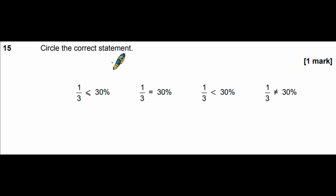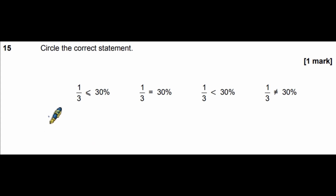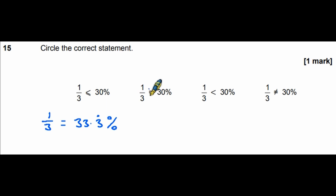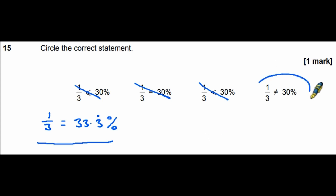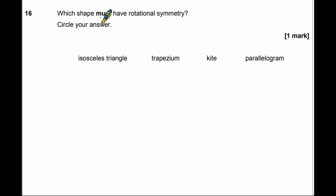Question 15: circle the correct statement about one third compared to 30%. One third equals 1 ÷ 3 = 33.3 recurring percent — it is larger than 30%. So it cannot equal 30%, cannot be smaller than it, and cannot be smaller or equal to it. The correct answer is: one third is not equal to 30%.